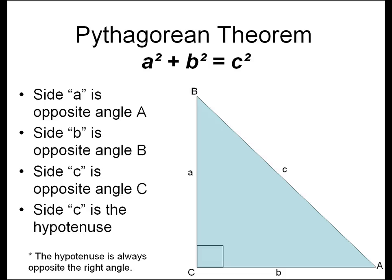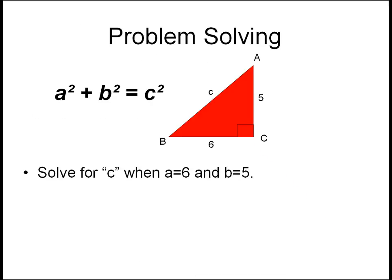A squared plus B squared equals C squared. Problem solving using the Pythagorean theorem. A squared plus B squared equals C squared. Solve for C when A equals 6 and B equals 5. 6 squared plus 5 squared equals C squared. We substitute 6 for A and 5 for B.